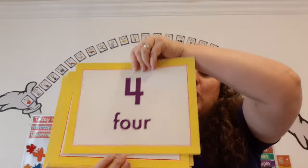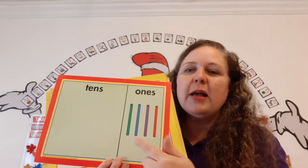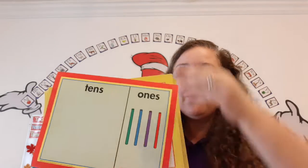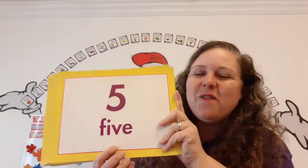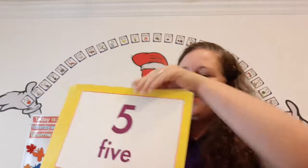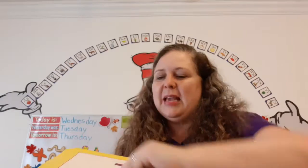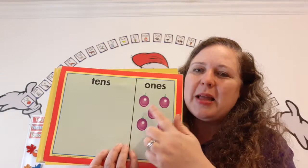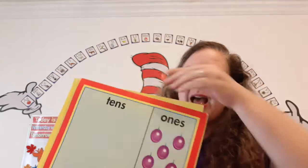Four — straws. One, two, three, four. Count with me. Five — grapes. One, two, three, four, five.